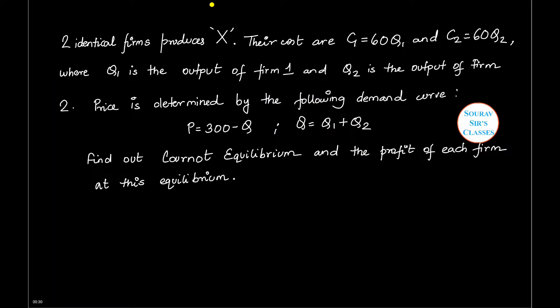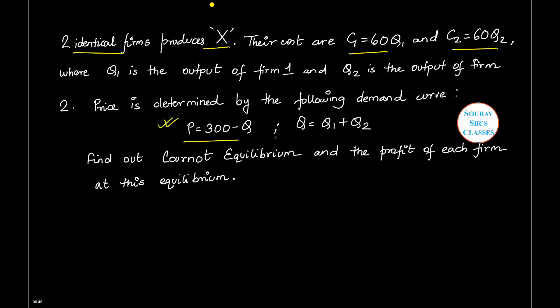So this is the question. There are two identical firms that produce good X. The cost function of both firms are given to us. The price P is determined by the following demand curve, where Q denotes Q1 plus Q2. We need to determine Cournot equilibrium and profit of each firm at this equilibrium.